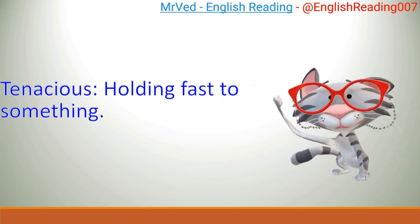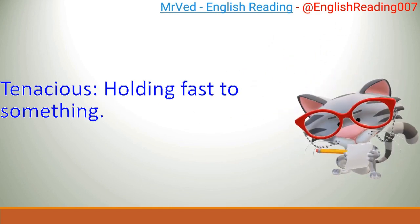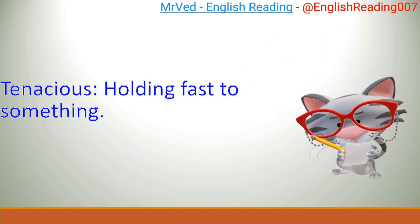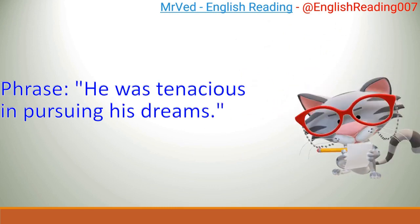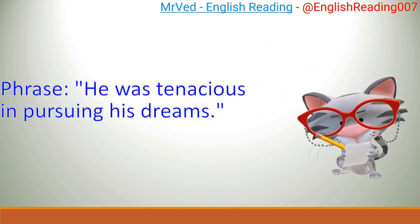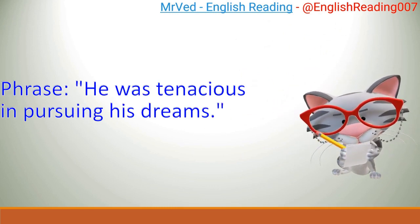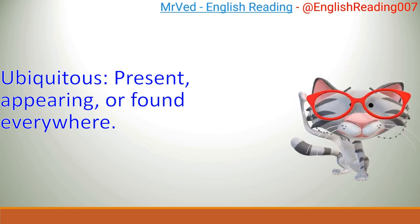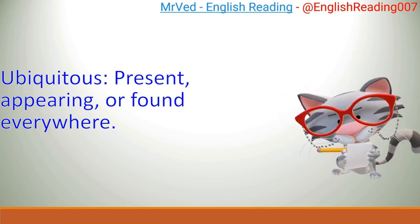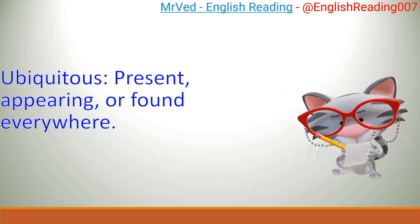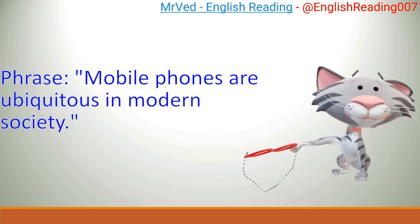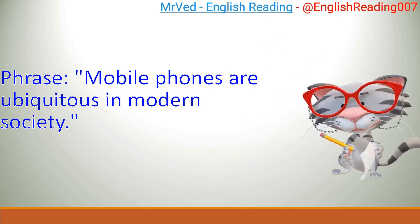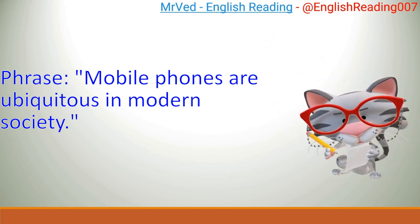Tenacious: holding fast to something. Example: He was tenacious in pursuing his dreams. Ubiquitous: present, appearing, or found everywhere. Example: Mobile phones are ubiquitous in modern society.